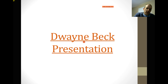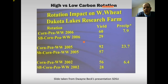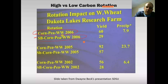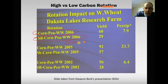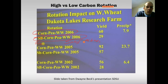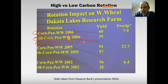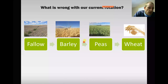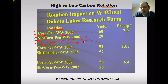At our live meeting we reviewed Wayne Beck's presentation. One of the big takeaways is if you look at two rotations compared at the university research station — one comparable to what we're doing: soybeans, corn, peas, and winter wheat, which is a 50% carbon rotation. What we would be doing instead is fallow, barley, peas, then winter wheat — a pretty common rotation here. With that mix we never get organic matter built above about 2% because we're not adding enough carbon back into the soil.